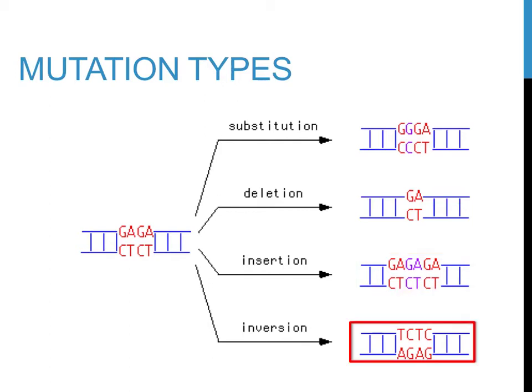With an inversion mutation, a chunk of DNA is flipped upside down, hence the name inversion. Note that instead of the expected sequence GAGA, the complementary base pairs are shown and the order is reversed.